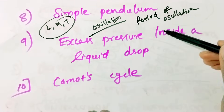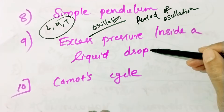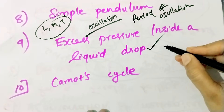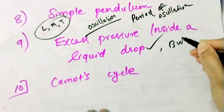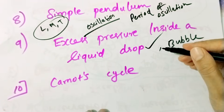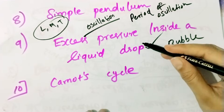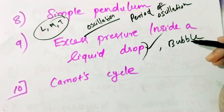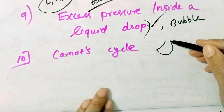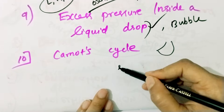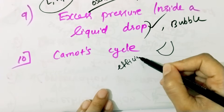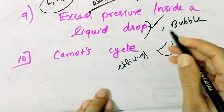And then, excess pressure inside a liquid drop, and excess pressure inside a bubble. Look at the fluid inside the bubble — this is worth 3 to 4 marks. Next is the Carnot Cycle: look at the efficiency equation — the Efficiency of the Carnot Engine.